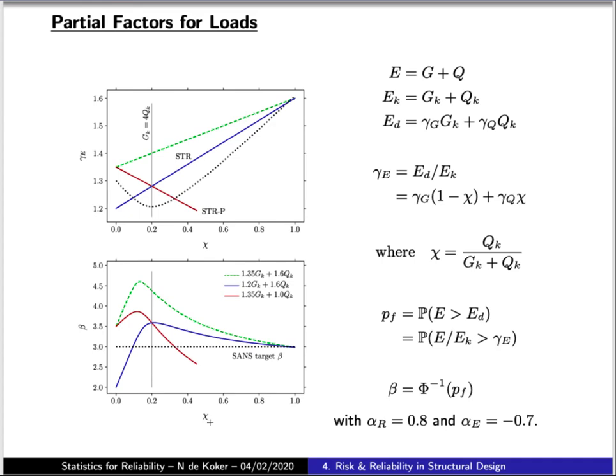Instead, the domain in terms of chi is split in two, with a separate set of partial factors applied in each of these two parts. There's a part where the self-weight dominates and a part where the imposed load dominates, and two separate sets of partial factors are chosen for each one.